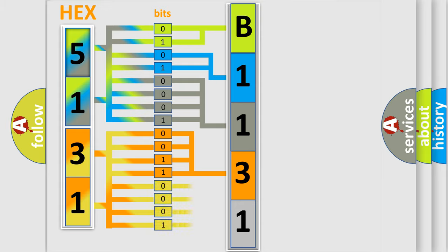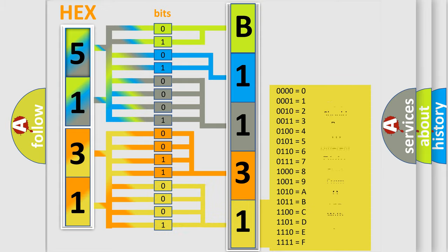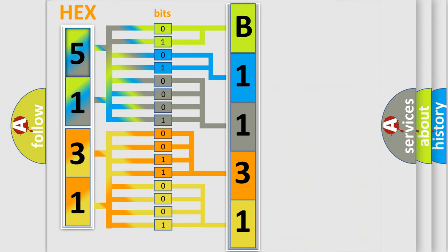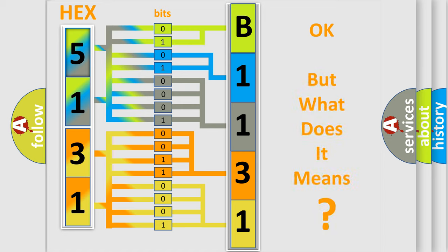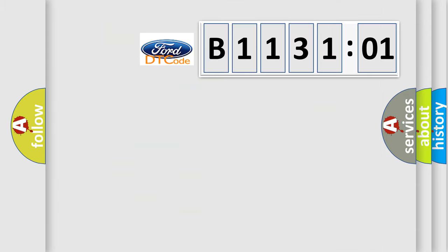A single byte conceals 256 possible combinations. We now know how the diagnostic tool translates the received information into a more comprehensible format. The number itself does not make sense to us if we cannot assign information about what it actually expresses. So, what does the diagnostic trouble code E113101 interpret specifically?